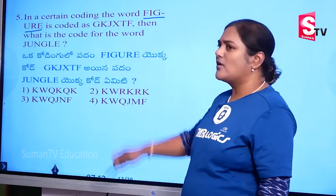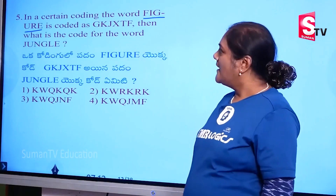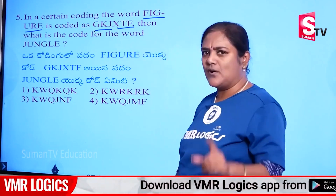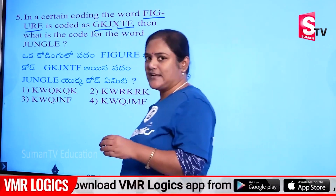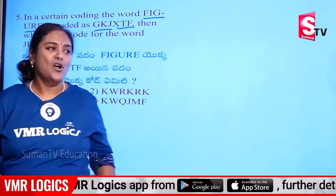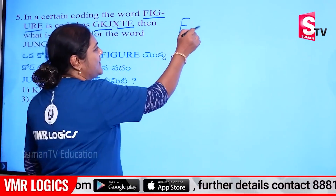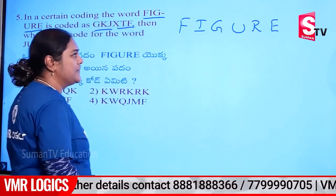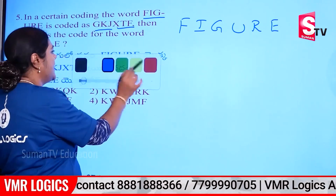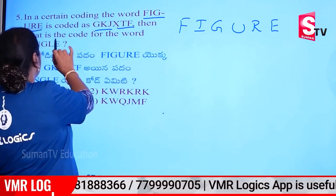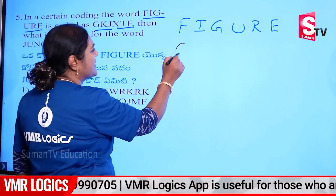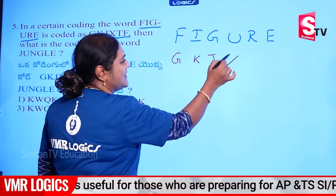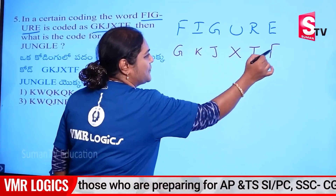Now, the next model is the figure. The code is GKJXTF. Okay, now this question is the code. All right. FIGURE. Now, here it is. GKJXTF.